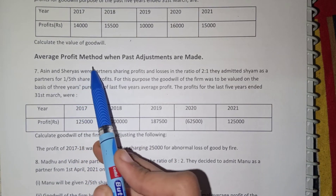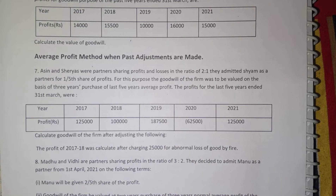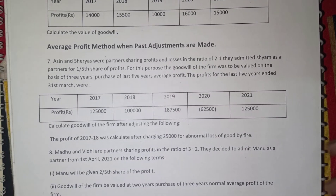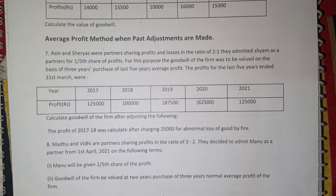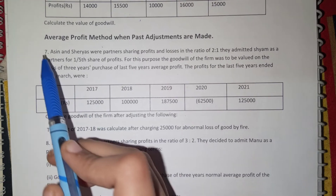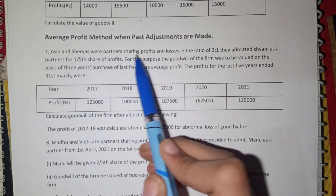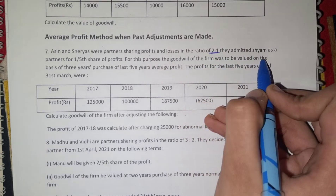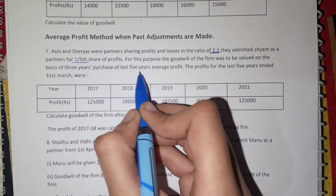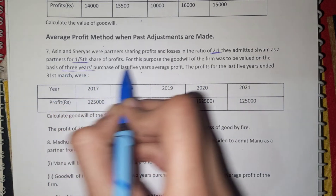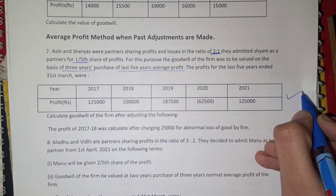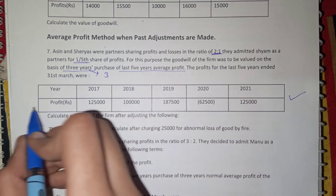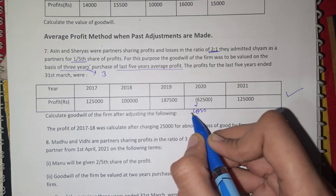Now let's talk about the average profit method with question 7. Asher and Shreya were partners sharing profits and losses in the ratio of 2:1. They have admitted Shaman for a 1/5 share. The purpose of goodwill is 3-year purchase of the last 5-year average profit. We have been given profits for the past 5 years, with some showing losses.